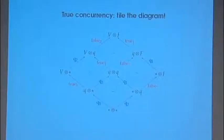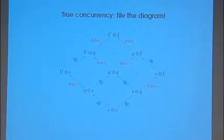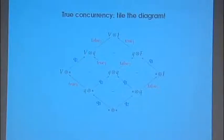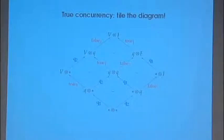An event structure is a partially ordered set — it's very simple — such that every event has a finite number of events below it. Two events could be incompatible: typically, playing 'true' will be incompatible with playing 'false.' The condition says that if M is incompatible with N, and P is above N, then M should be incompatible with P — if you're incompatible with someone, you're incompatible with all their offsprings.